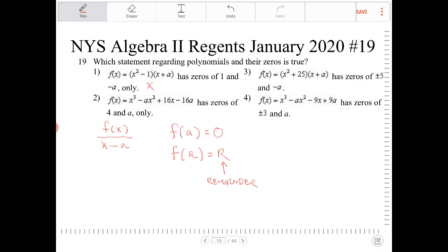Okay, option 2. f of x is equal to x cubed minus ax squared plus 16x minus 16a has zeros of 4 and a only. Something else that you need to know about polynomials, if you have a cubic equation, there could be at most three different roots. And the number of the degree measure of the polynomial gives you the possibility of how many roots there can potentially be. There can potentially be three roots here, but they're telling us that there's only two.